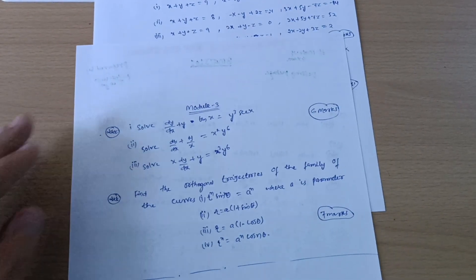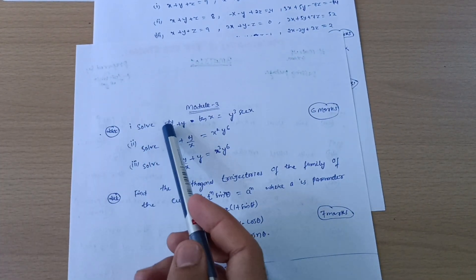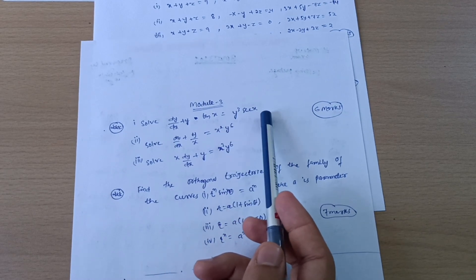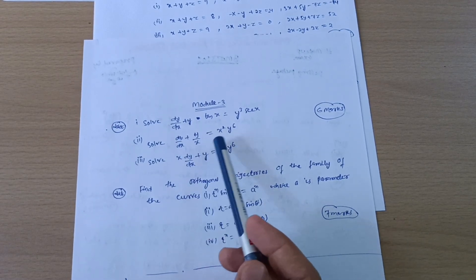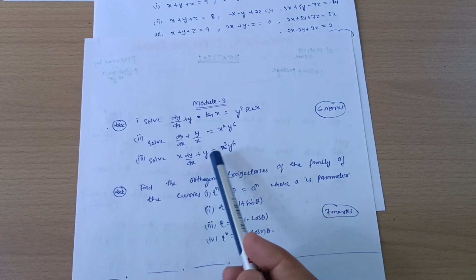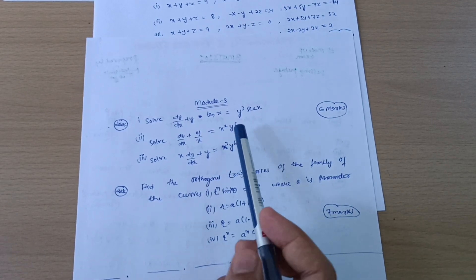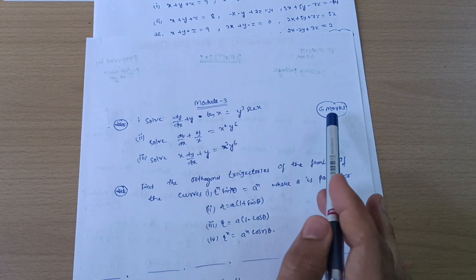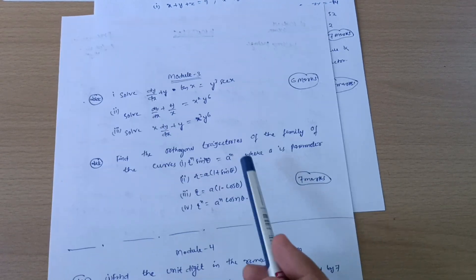Next we have model third. Solve dy/dx plus y times tan of x is equal to y cube of sec of x. Solve dy/dx plus y by x is equal to x square y raise power 6. Solve x times dy/dx plus y is equal to x cube y raise power 6. Go through these three questions. Surely one will come in the examination. This is six marks question.